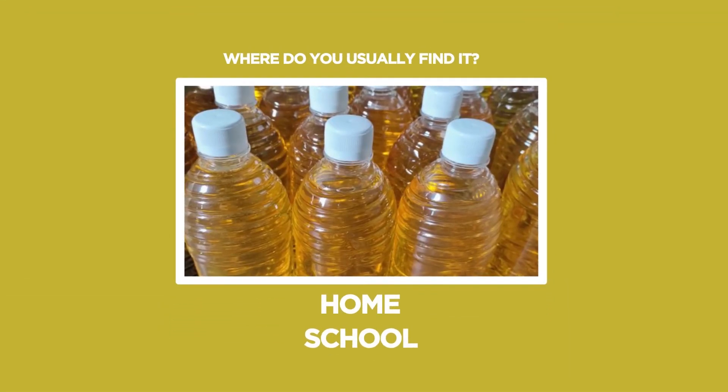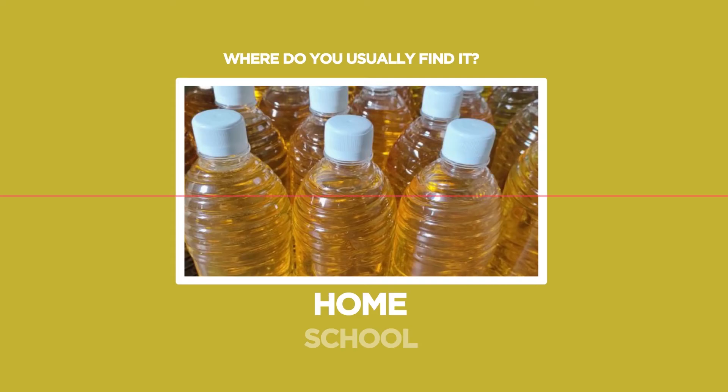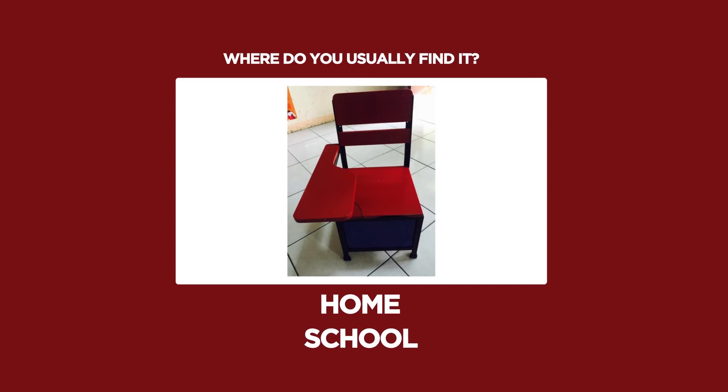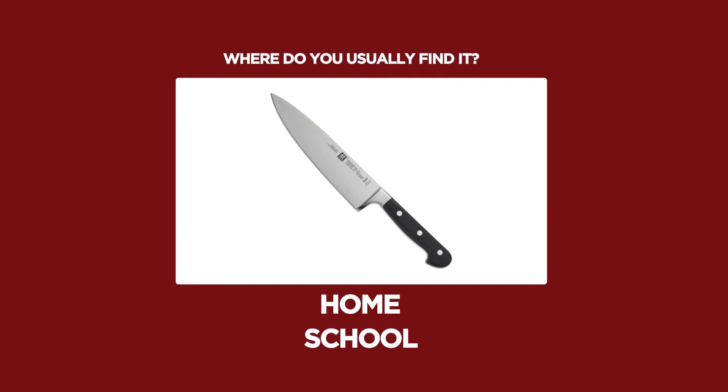Kids, it is good to know that you already have an idea which materials are useful and harmful. Now take a look at the materials around your house and try to recall the materials we usually find at school. Be ready for the next activity! Get a pen and a piece of paper. This time, you will classify the materials that will be flashed on your TV screen. Write where they are usually found, at home or in school. Are you ready? Let's start! First is cooking oil. Where do we usually find it? Correct! It is usually found at home. Second is armchair. Where do we usually find it? You got it right! It is usually found in school. Third is knife. Where do we usually find it? Great job! It is usually found at home.